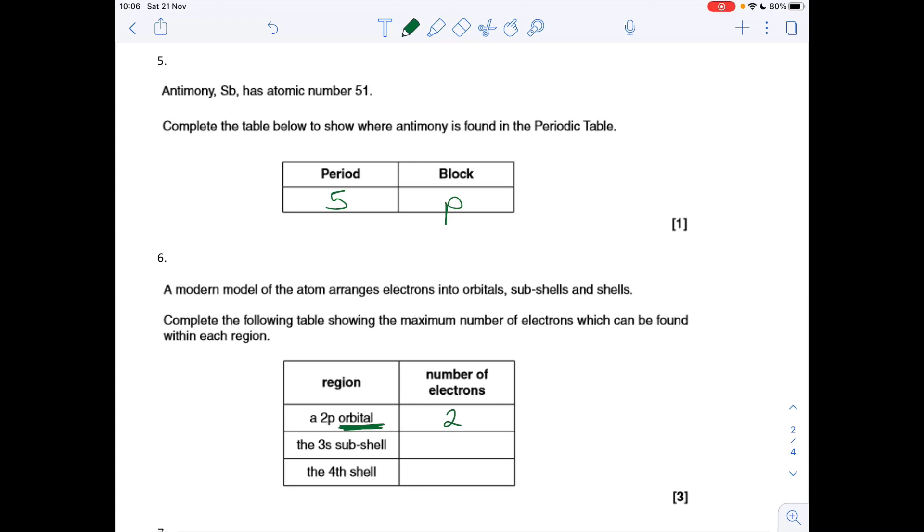But it's the orbital, so it's two. The 3s subshell: the s subshell is only made from one orbital, so that's two as well. The fourth shell: already had that with the terbium question, 32.